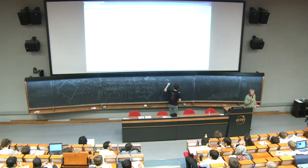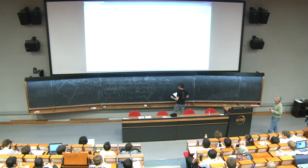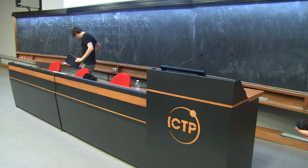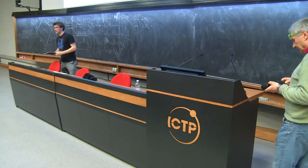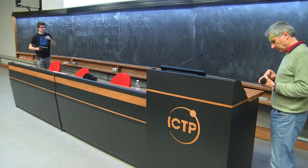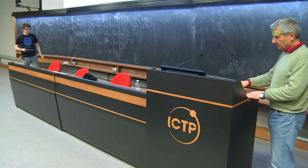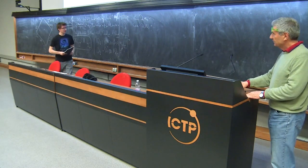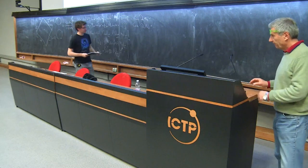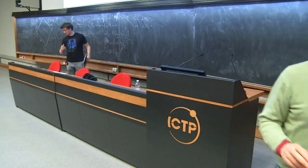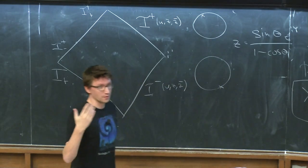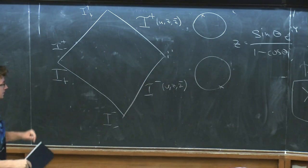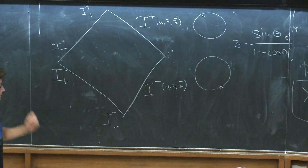Let's start with the third lecture by Sascha. Welcome back. I will start because there is so much material already that I will just remind you of all the notations and what we have done. We are discussing the universal infrared structures of gravitational theories in asymptotically flat spacetime.